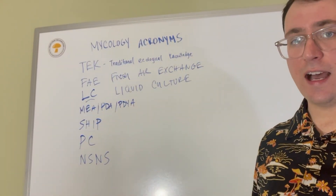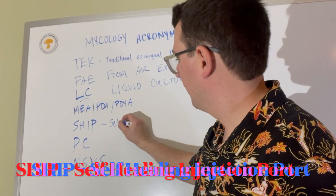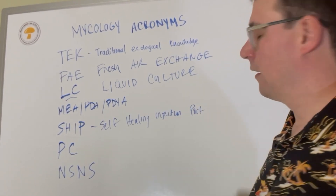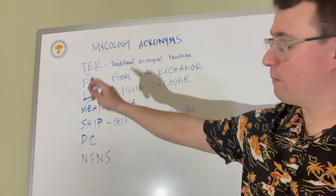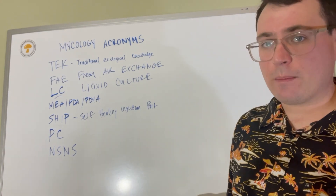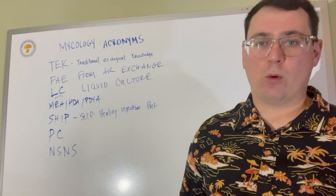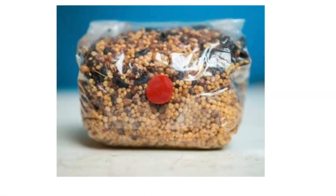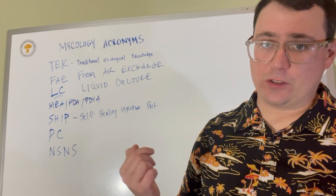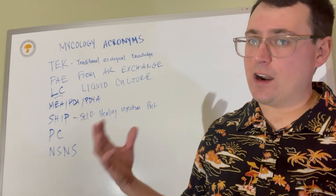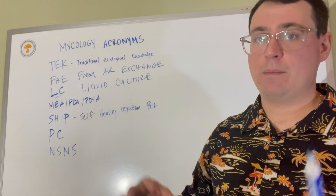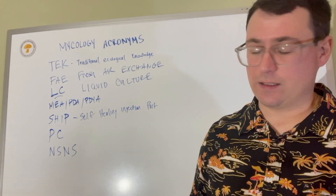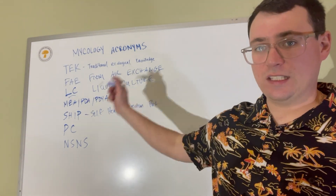The next acronym is SHIP — Self Healing Injection Port. That ties back to LC. You can also find these on grain bags or all-in-one grow kits. A Self Healing Injection Port is simply a rubber stopper or rubber patch that you inject your liquid culture into. When you pull the needle out, it self-heals — closing up and preventing contaminants from getting into the system. It's really simple but a very valuable tool, especially when working with liquid cultures.